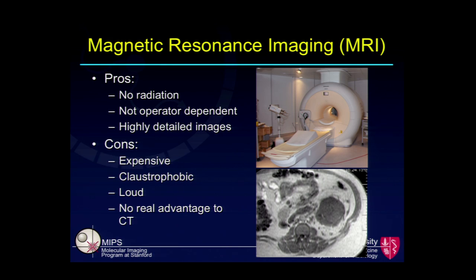Magnetic resonance imaging or MRI provides even slightly stronger anatomical detail — the soft tissue contrast is a little bit better than CT. And a further advantage is that there's no radiation involved whatsoever. However, it's not really taken over CT scanning as first-line because it's a very expensive exam, many people can't tolerate it due to claustrophobia and the narrow bore, and it's very loud. Since it doesn't dramatically improve on what we already see with CT with IV contrast, it's not typically used as the standard approach.